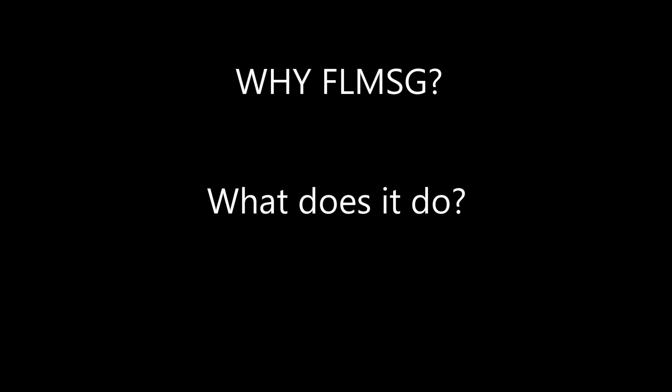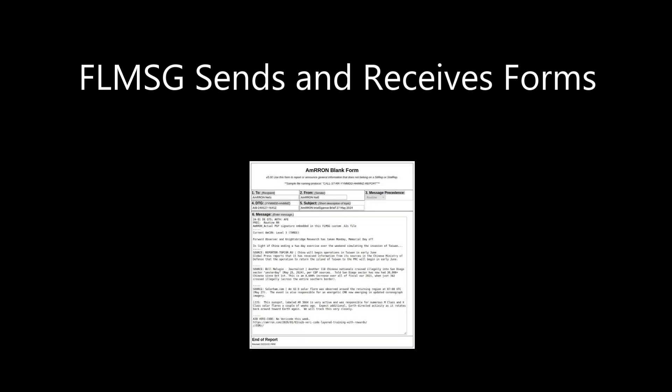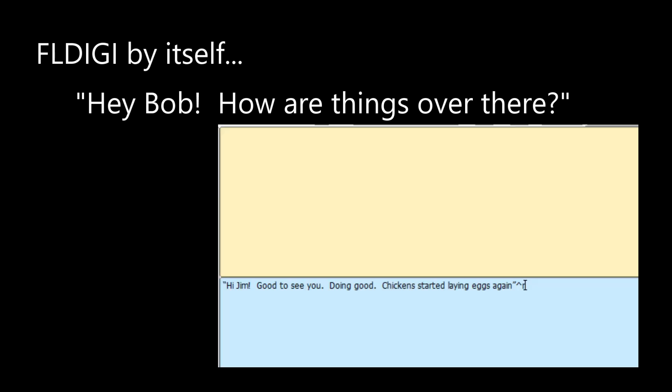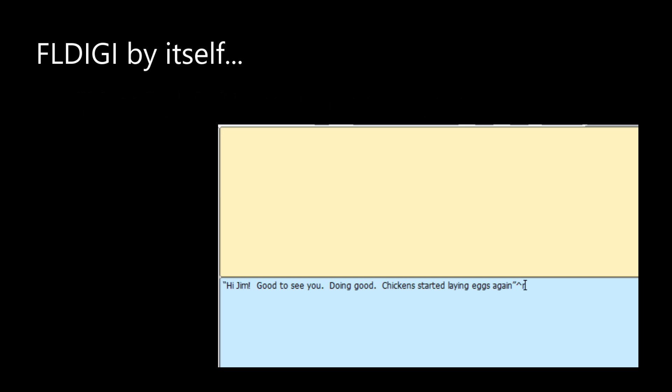You might be asking: why FL Message, and what does it do? As explained previously, FL Message is a program for sending or receiving pre-formatted forms. FL Digi by itself is a way for a station to send text to one or multiple stations simultaneously. It can work as a keyboard-to-keyboard chat program — for example: 'Hey Bob, how are things over there?' 'Hey Jim, good to see you, doing good, chickens started laying eggs again.'